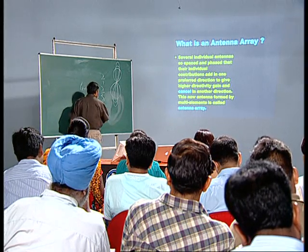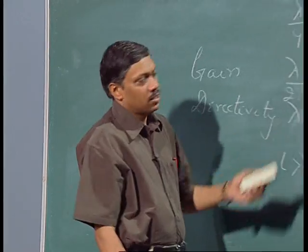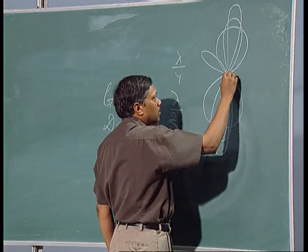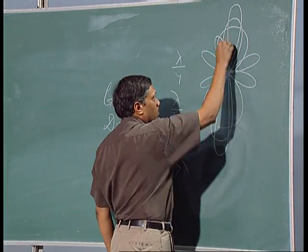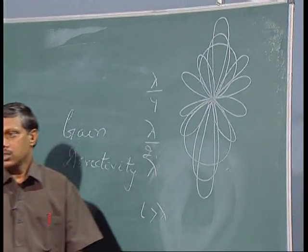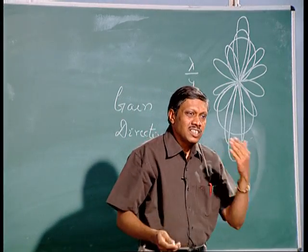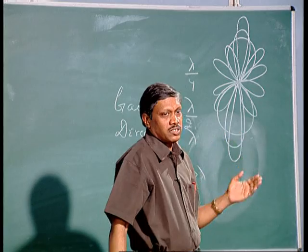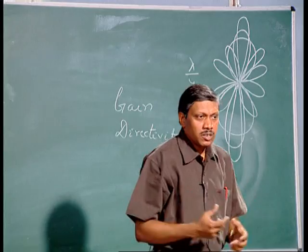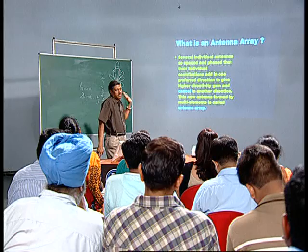But once you increase the length greater than lambda, the dipole loses its characteristics and you get a flower-type pattern instead. That is why this approach of increasing length has a limitation, and when you need very high directive gain, you cannot adopt this particular approach.